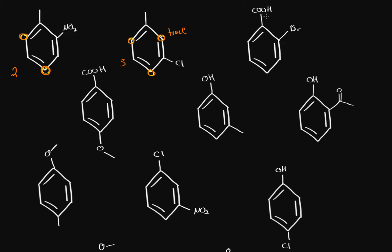In the third molecule, we have a carboxyl group which is electron-withdrawing, meaning it's meta-directing. So the carboxyl directs to this position and this position. The bromine, which is a halogen, is ortho and para directing — so it directs to the ortho positions (this and that) and the para position (this one). We'll have up to two different products.